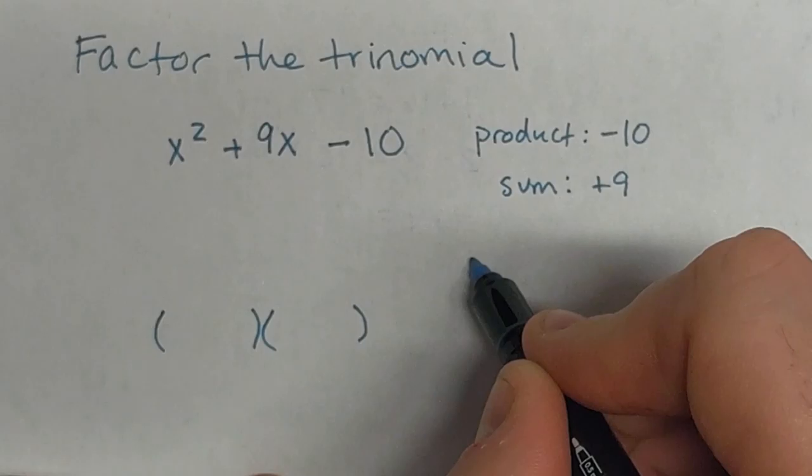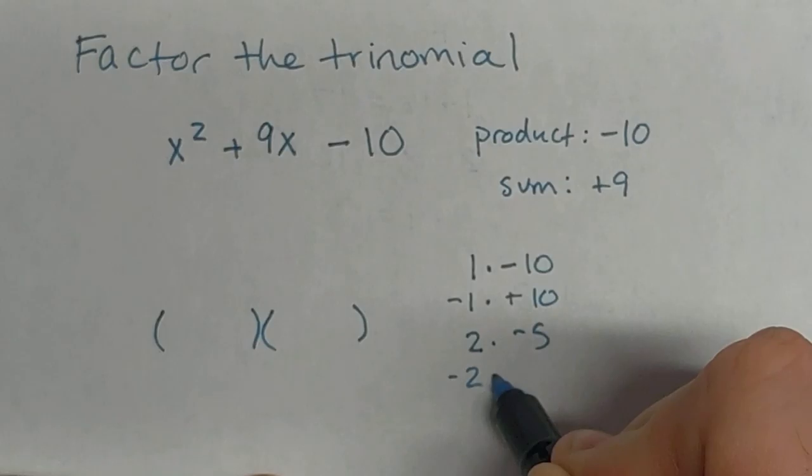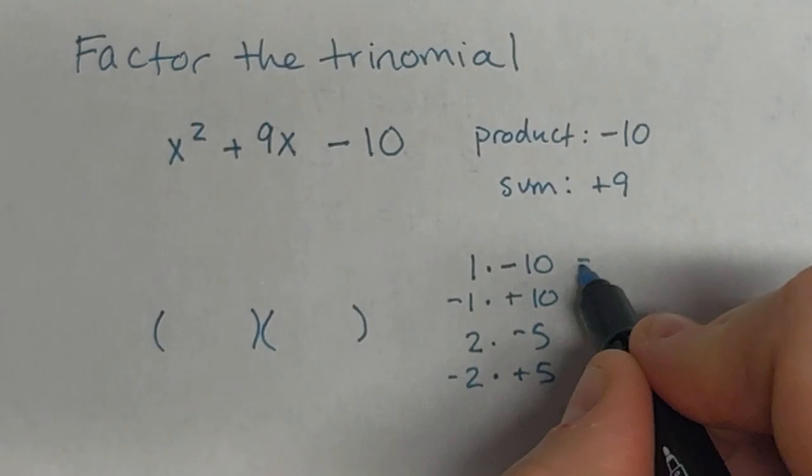I'm going to start with my product. What numbers can I multiply to get to negative 10? I could do 1 and negative 10, or I could do negative 1 and positive 10. I could do 2 and negative 5, or negative 2 and positive 5, and those are my factors.